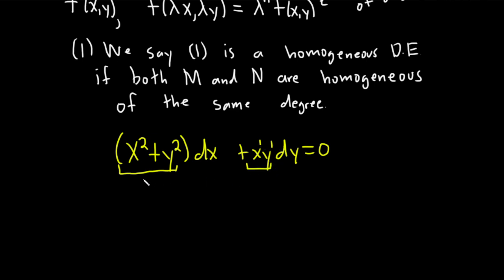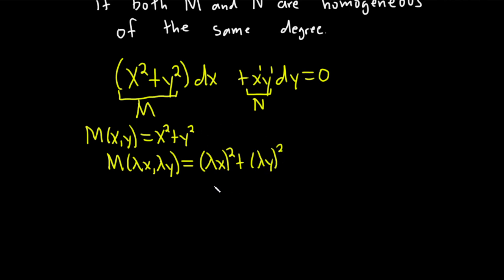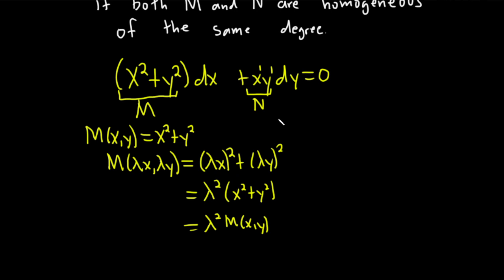Let's check quickly. Here M(x, y) = x² + y². Then M(λx, λy) = (λx)² + (λy)² = λ²x² + λ²y² = λ²(x² + y²) = λ² M(x, y). So we've proven that this function is homogeneous of degree 2. I did that quickly, but I want to get to the real meat of this video, which is explaining why the process works.